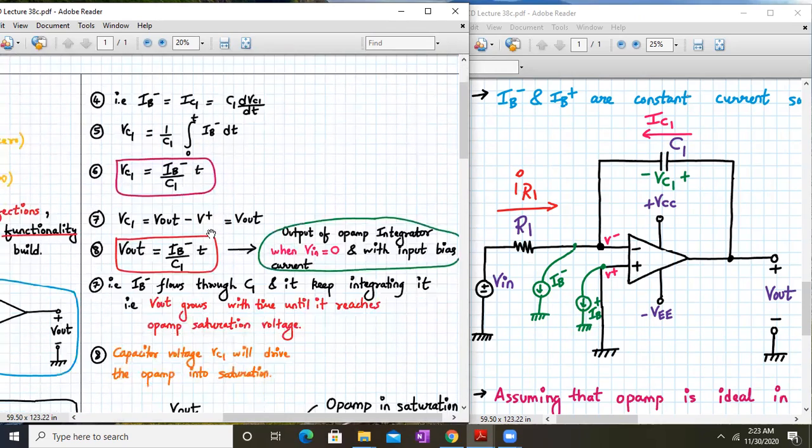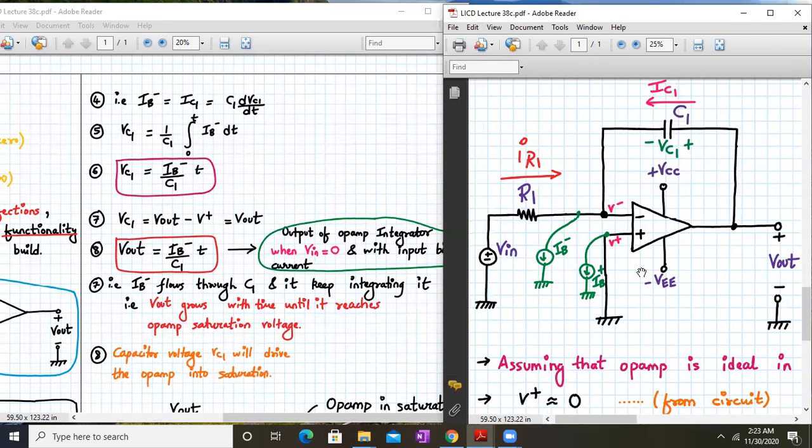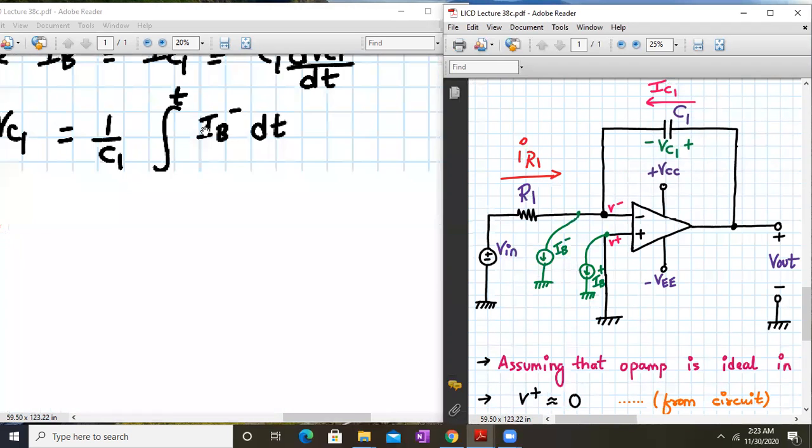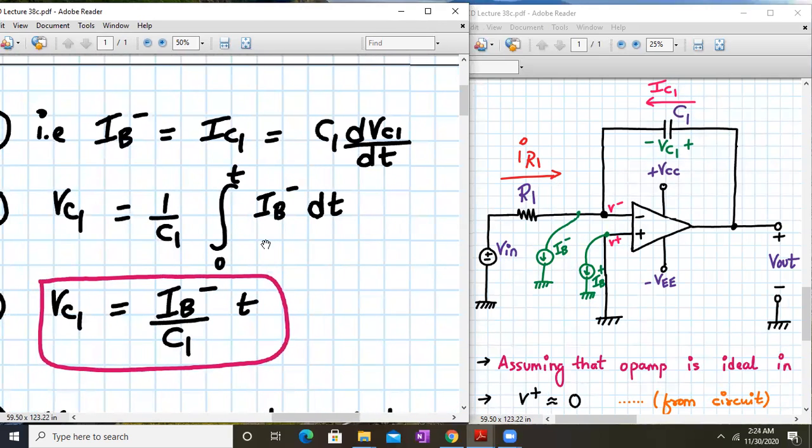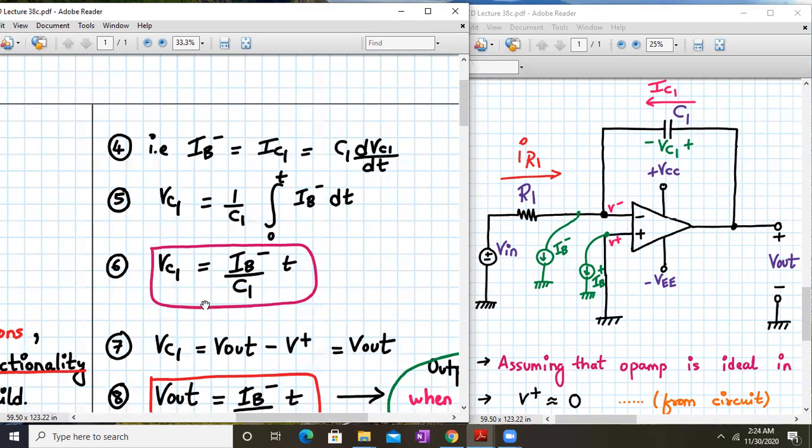In summary, if we see iv- over here, iv- is equal to ic1, which is equal to c1 dvc/dt. Current flowing to the capacitor is given by the formula c dvc/dt. So what will be the voltage across the capacitor? One upon c1 integral of zero to t iv- dt. vc1 will be equal to iv- divided by c1 into t, where t is the time progression.